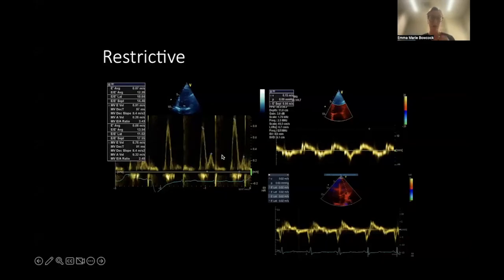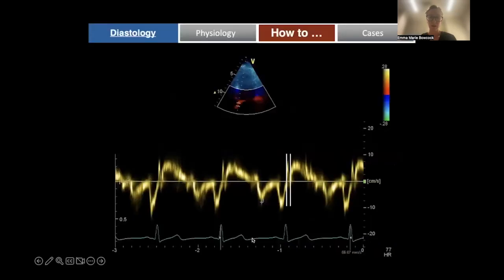This is how it would look. We have this classic restrictive pattern with our really tall E-wave, E-velocity of 90 centimeters per second, and our decel time which is really short, 91 milliseconds, giving us an E to A ratio of 2.4. We'll put this with the clinical context. Then we look at our E-prime: septal E-prime is terribly low at 4 centimeters per second and lateral E-prime of barely anything. This would be absolutely classic for restrictive or grade 3 diastolic dysfunction and raised left atrial pressures.